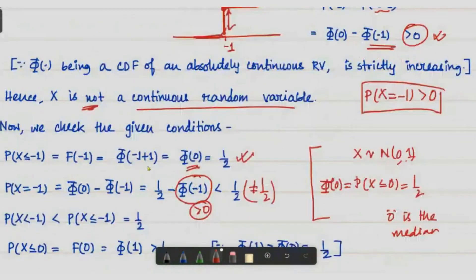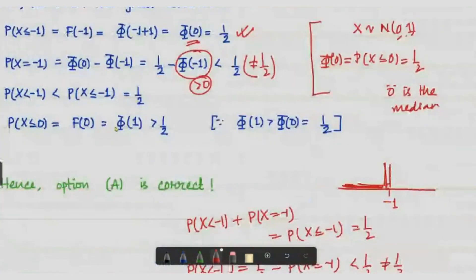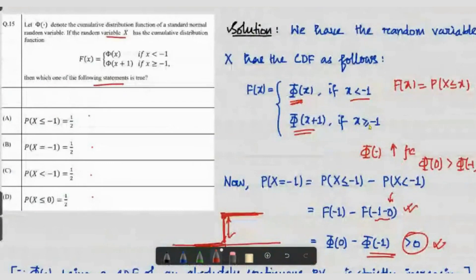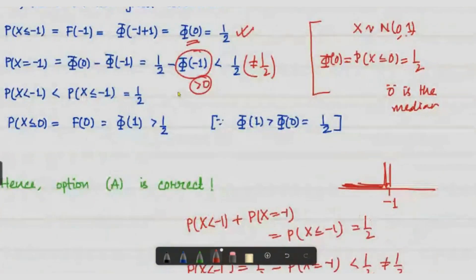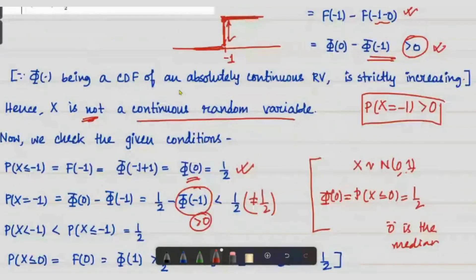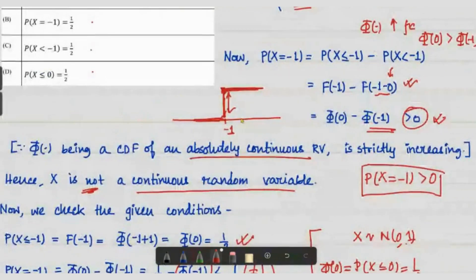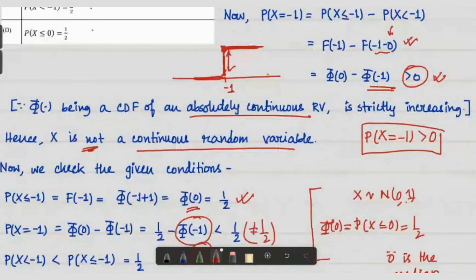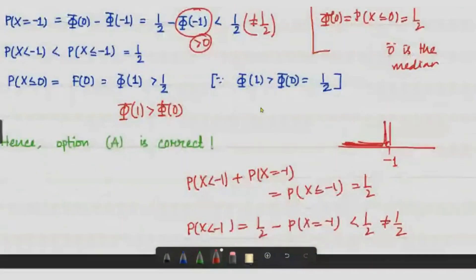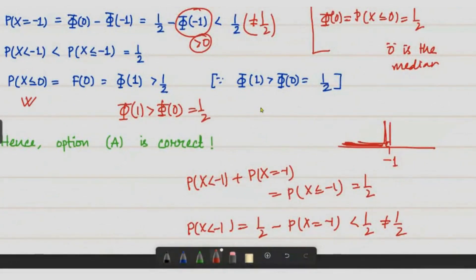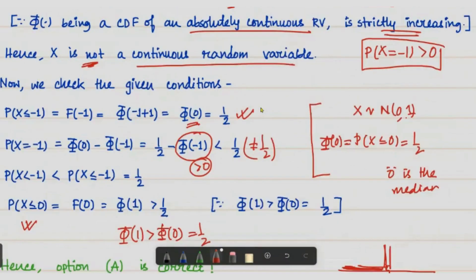Now we check whether P(X < 0) is greater than or equal to one-half. P(X < 0) is F(0), and since x = 0 is greater than or equal to minus one, we use Φ(x+1), giving Φ(1). Since Φ is strictly increasing, Φ(1) is greater than Φ(0) = 1/2. Hence P(X < 0) is greater than one-half, and only option A is correct.